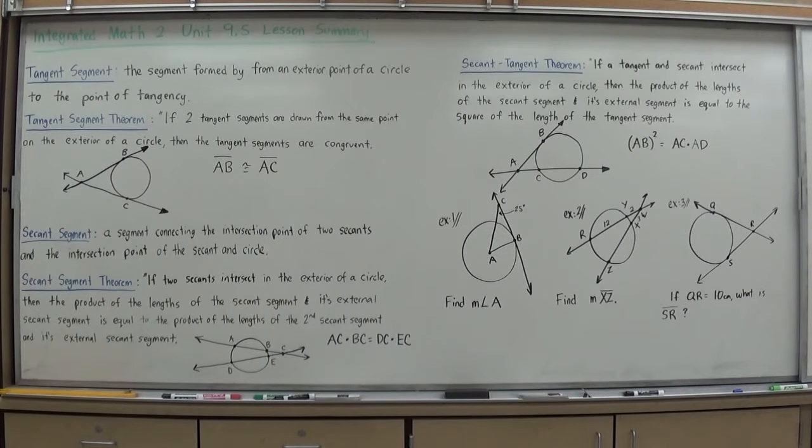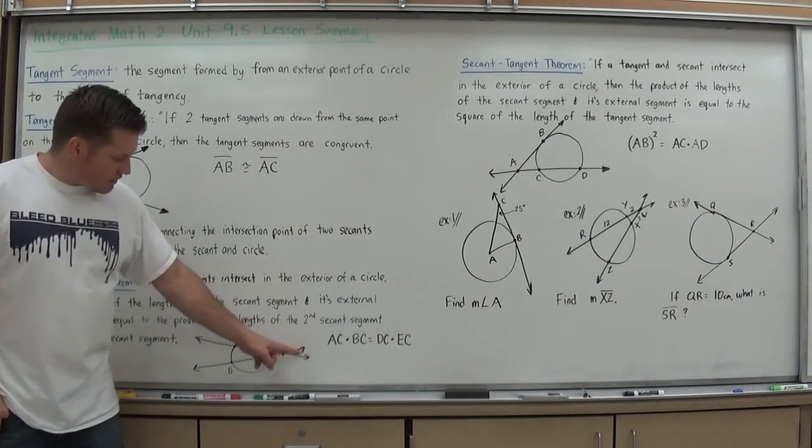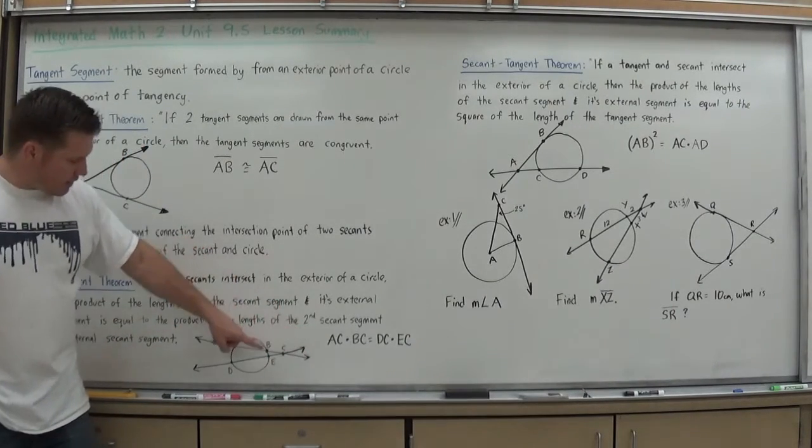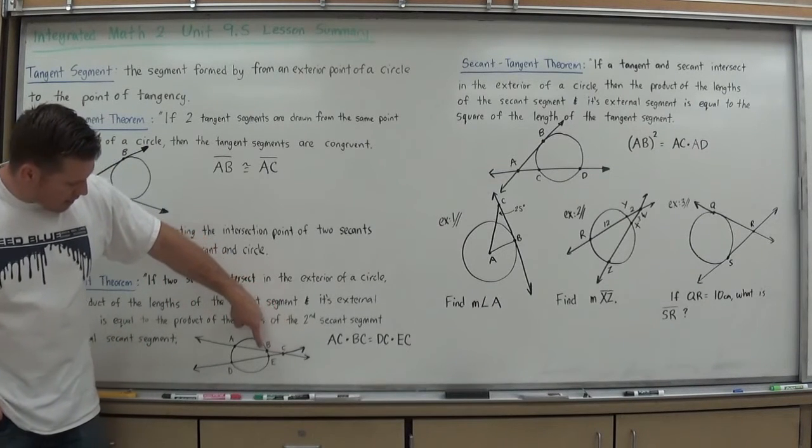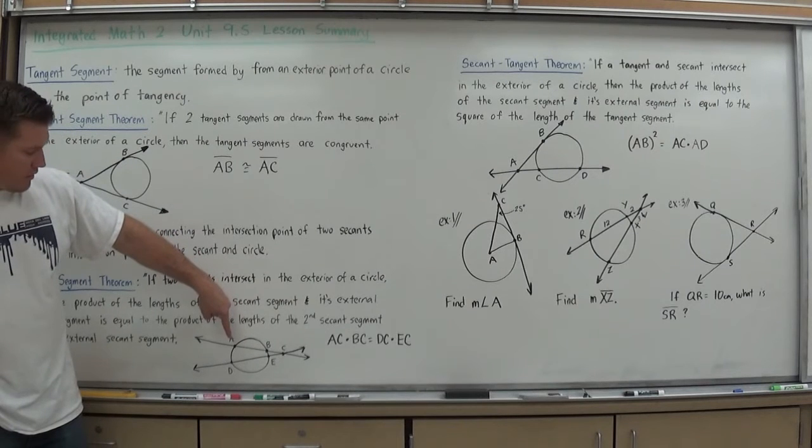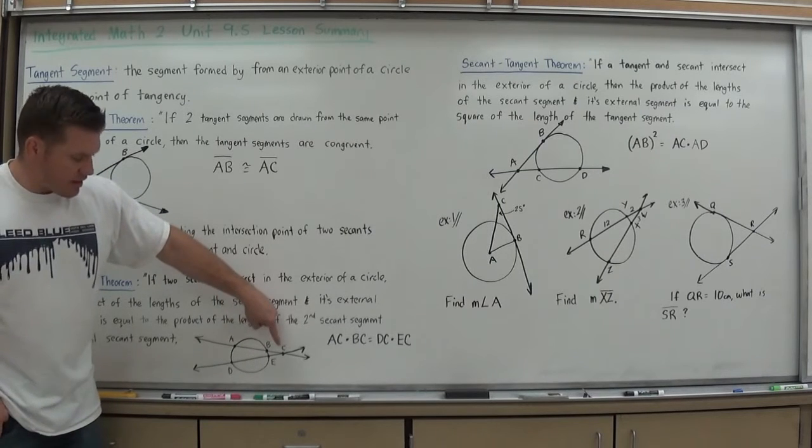A secant is a line that passes through a circle, intersects at two points. A secant segment is a segment connecting the intersection point of two secants and the intersection point of the secant and circle. For example, here I have C, line CBA, that is a secant, and I have line CED, that is a secant. A secant segment could be this point of intersection on the outside through to the endpoint of the secant. So CA is an example of a secant segment.